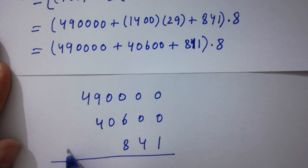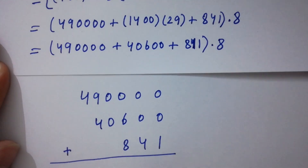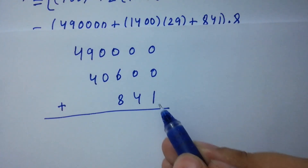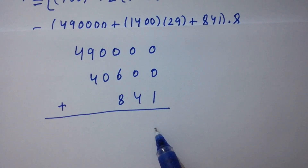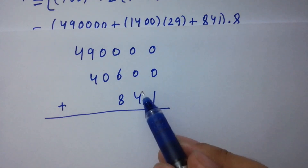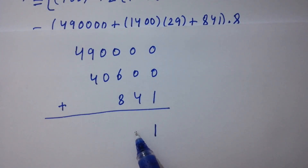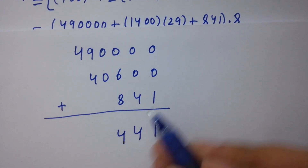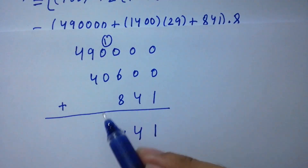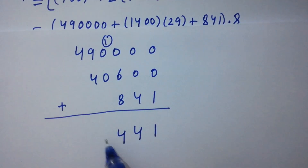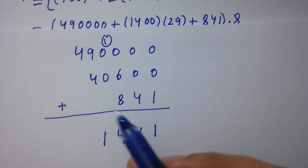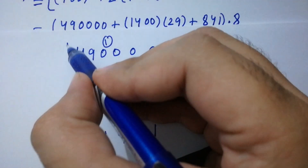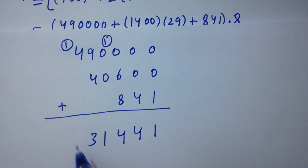Adding these together: 490,000 plus 40,600 plus 841. Working through the digits: ones give 1, tens give 4, hundreds: 6 plus 8 is 14, write 4 carry 1, thousands: 1 plus 0 plus 0 plus 1 carry is 2 — wait, continuing carefully we get 531,441. So 729 squared equals 531,441.